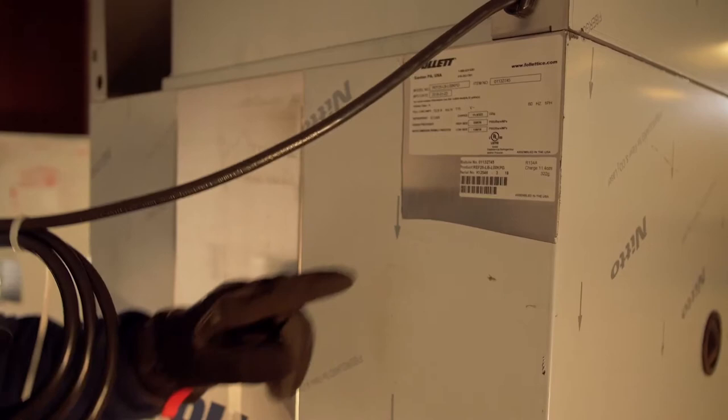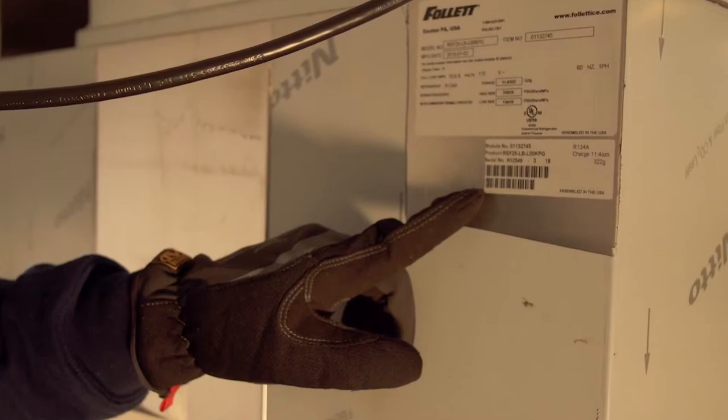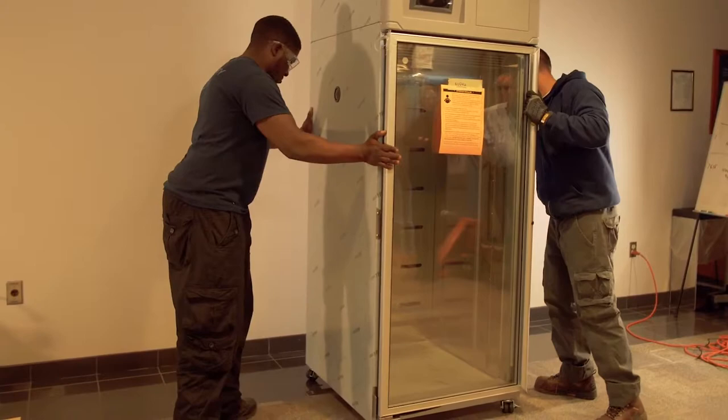Once off the pallet, locate the serial plate at the back of the unit and take a photograph, ensuring the serial number can be clearly read on the picture.